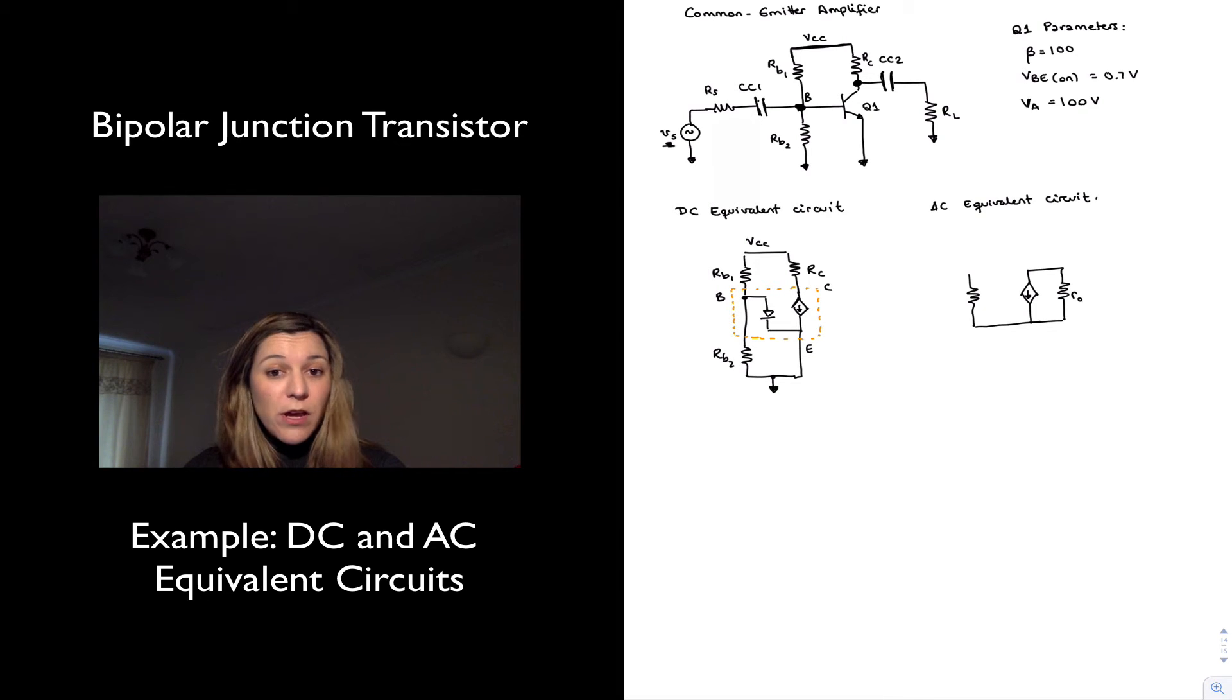If we are not given an early voltage, what we essentially can do is assume that the early voltage is equal to infinity, which means that this resistor little ro will be an open circuit, and we can just omit it from our model. But whenever we are given a value for early voltage, it's assumed the intention is for us to consider the output resistance.